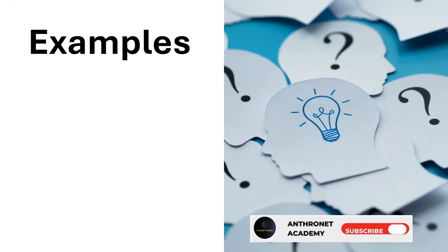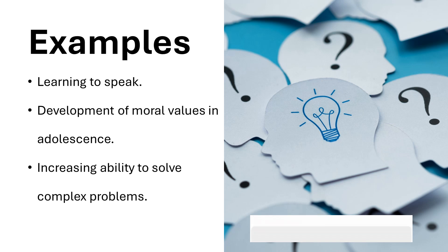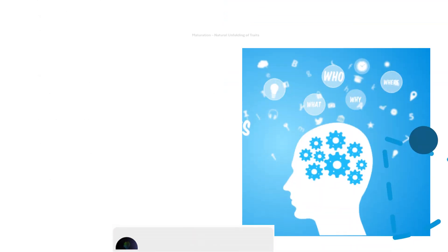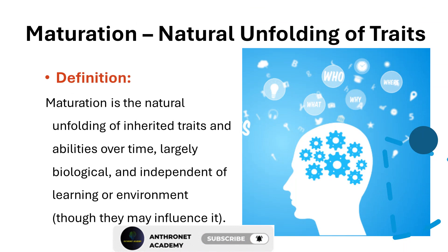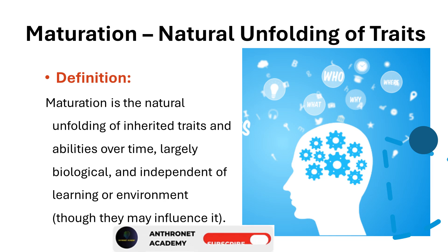Examples of development: learning to speak, development of moral values in adolescence, increasing ability to solve complex problems. Maturation is the natural unfolding of inherited traits and abilities over time, largely biological and independent of learning or environment, though they may influence it.